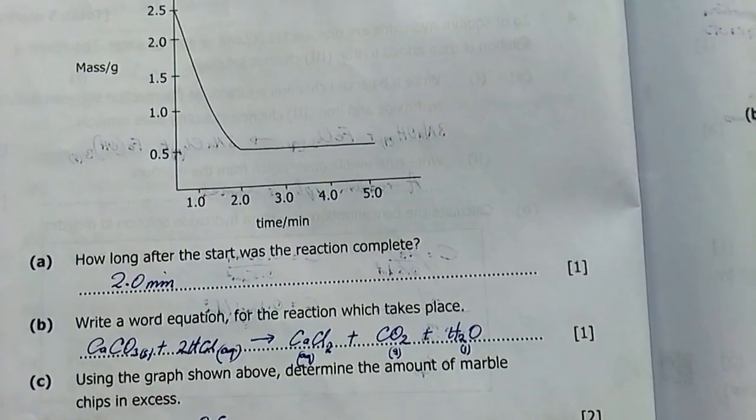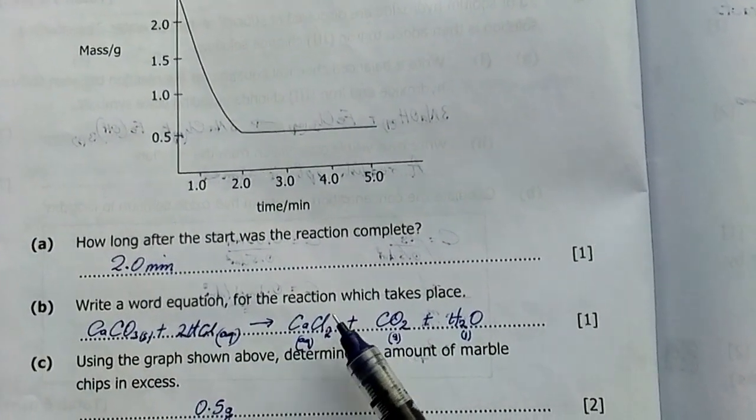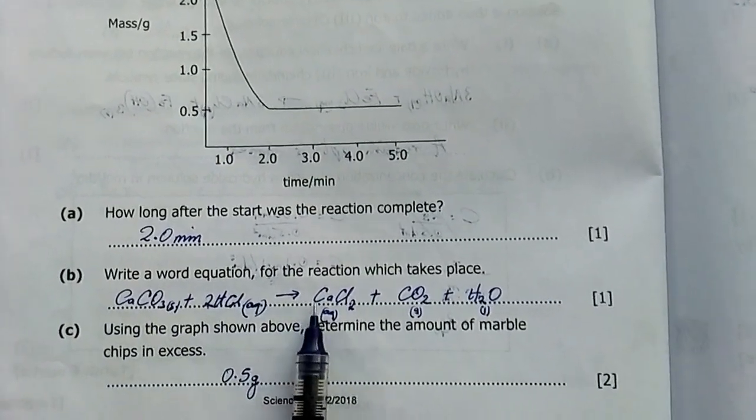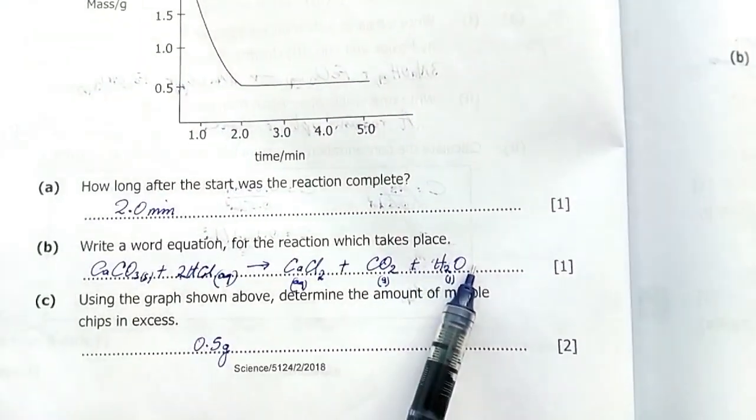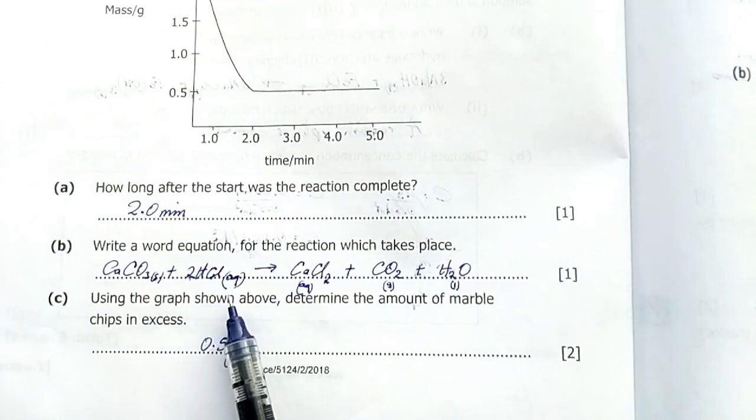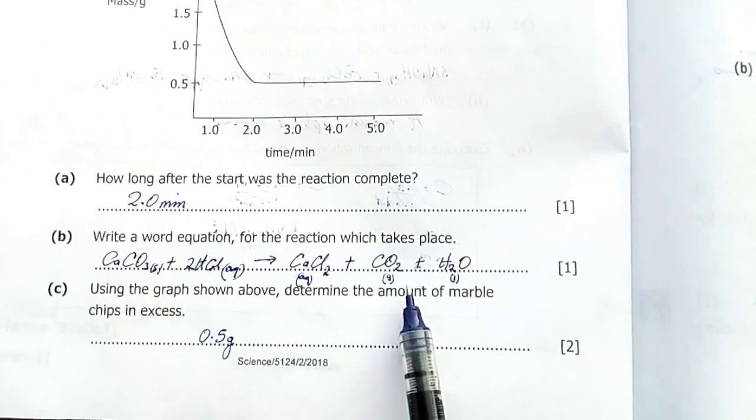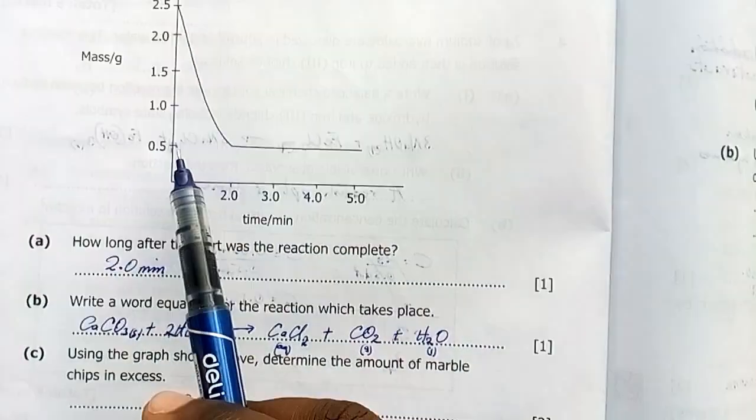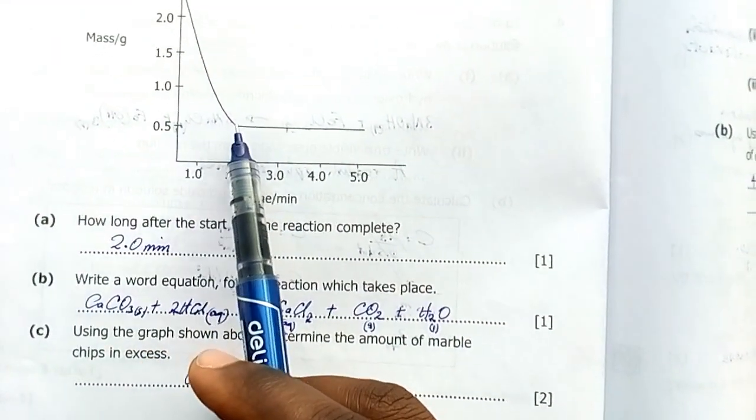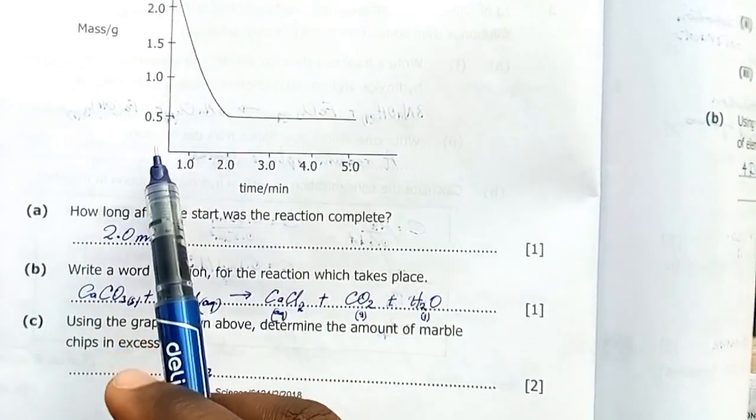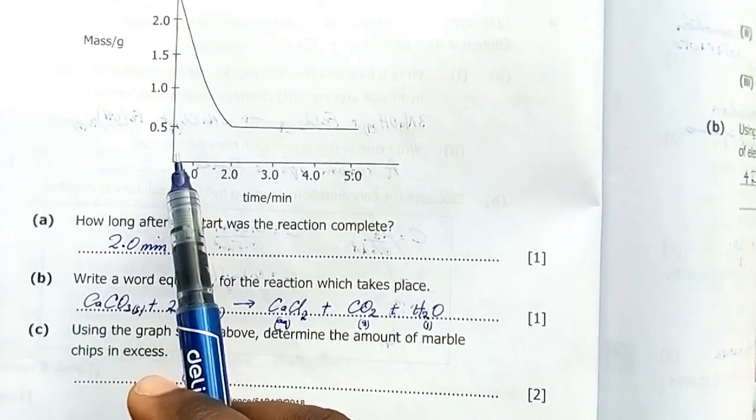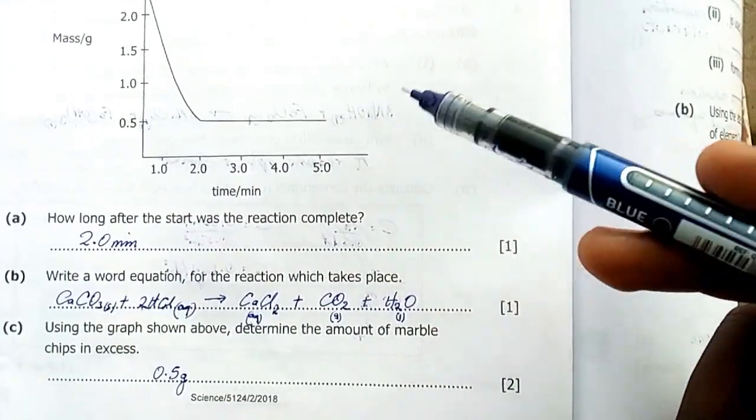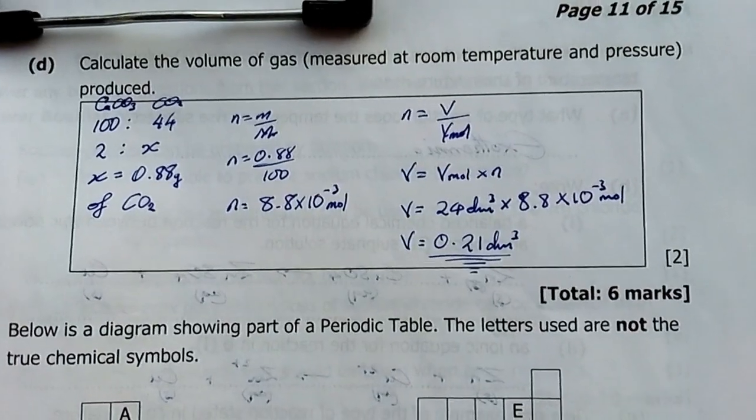Write the equation for the reaction that took place. Calcium carbonate plus hydrochloric acid gives calcium chloride plus carbon dioxide plus water. Using the graph shown above, determine the amount of marble chips that is in excess. Marble chips in excess is 0.5 grams. The mass remained at 0.5 grams constantly, meaning this much did not react, meaning the acid finished and the mass remains constant with time.